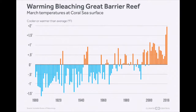This is a graph of the Great Barrier Reef's temperatures over the past 100 years. As you can see on the right side of the graph, the temperatures have risen a drastic amount over the past 16 years. The ocean's temperature has risen mainly due to climate change.